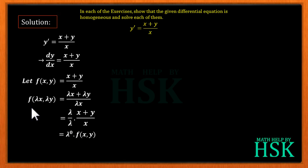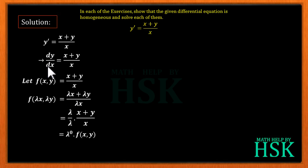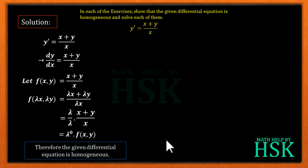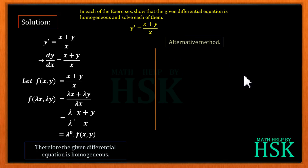Since we have obtained f(λx, λy) = λ⁰ · f(x, y), this means that f(x, y) is a homogeneous function of degree 0, and therefore the given equation is a homogeneous differential equation.